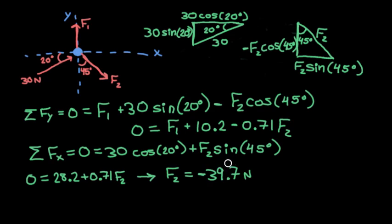So F2 equals negative 39.7 Newtons, and we're going to plug this value for F2 up here. So then we just have F1 is the only variable up here, and that will give us F1 equals negative 38.4 Newtons. So again, F1 is negative, which means that this is the wrong direction. It should be pointing in the exact opposite direction, but that's okay.